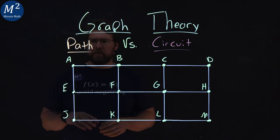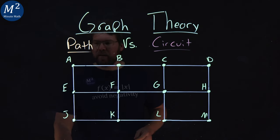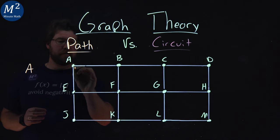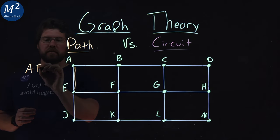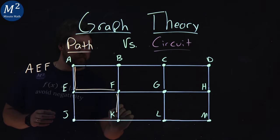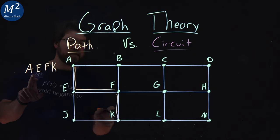So for example here, if I want to go from A to K, a path I could take is I would go from A to E to F to K. And that would be a path from A to K.